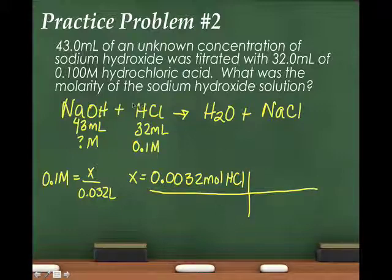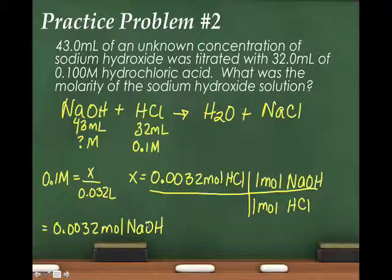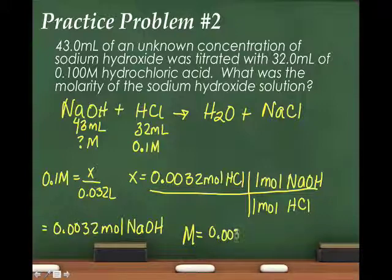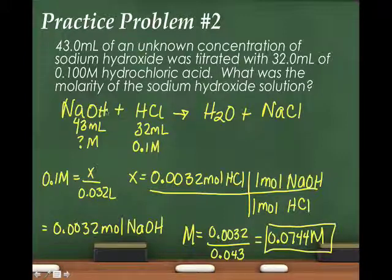Step three — stoichiometry using the balanced reaction: 1 mol HCl reacts with 1 mol NaOH, so I have 0.0032 mol of NaOH. Step four — calculate molarity of NaOH: 0.0032 mol ÷ 0.043 L = 0.0744 M. That is the answer. I have solved for the molarity of the unknown sodium hydroxide solution, which was the main goal of doing this titration.